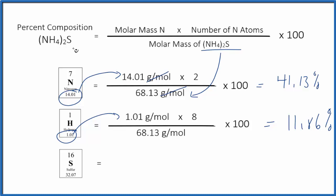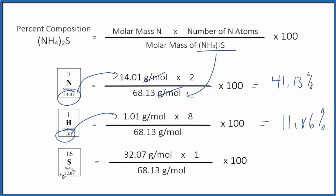So we have 32.07, multiply that by 1 since we only have 1 sulfur atom, divide by the molar mass. Then we get 47.07%. And these numbers should add up to very close to 100. It might not be exact, but should be very close.